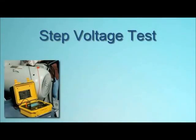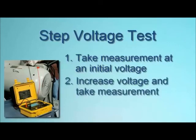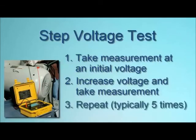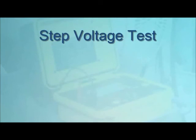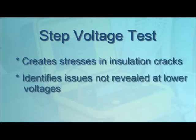A third method is the step voltage test. This involves testing at two or more test voltages and comparing the results. The test begins at an initial test voltage; at a specified interval, typically one minute, a measurement is recorded, after which the test voltage is increased — usually to five times the initial voltage. This process may be repeated through several steps, with measurements taken after one minute and the test voltage increased at a 5-to-1 ratio over the previous voltage. A common practice is to test at five voltage steps. The step voltage test is designed to create electrical stresses on internal insulation cracks, identifying potential problems that may not be revealed by testing at lower voltages.